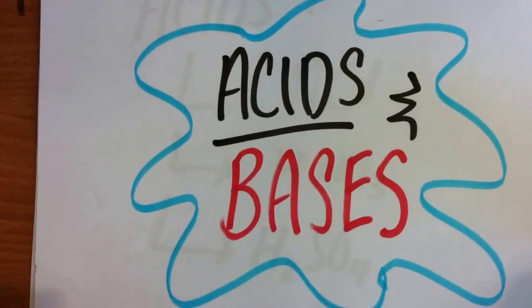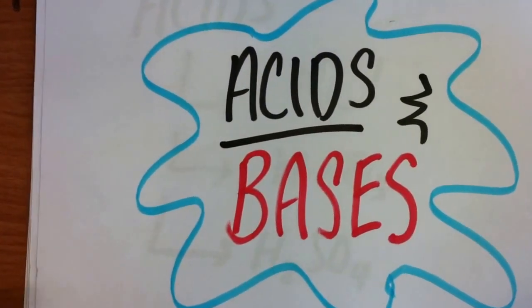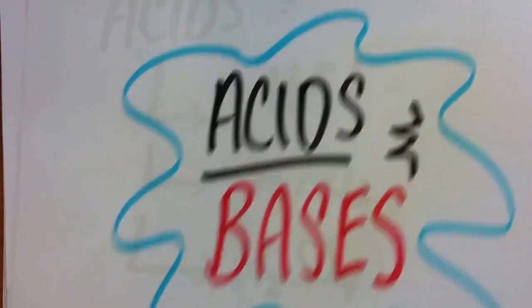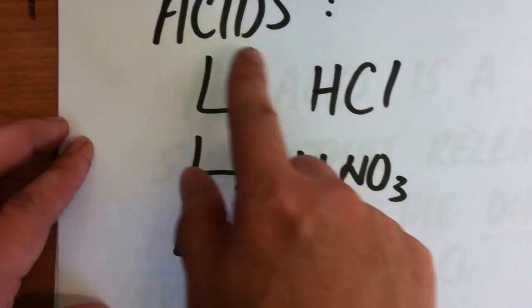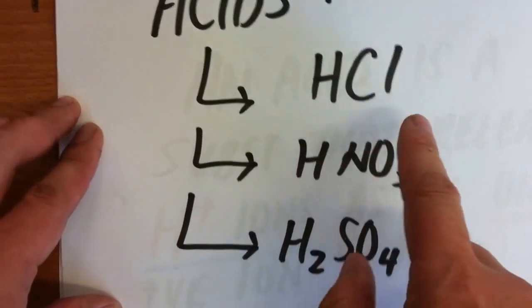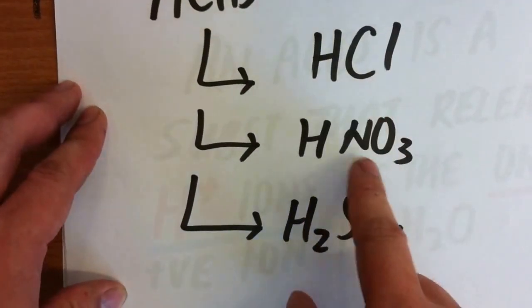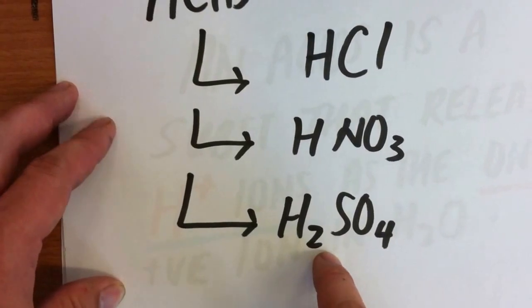This video is on acids and bases. Let's start with the acids. Acids are things like HCl, HNO3, H2SO4.